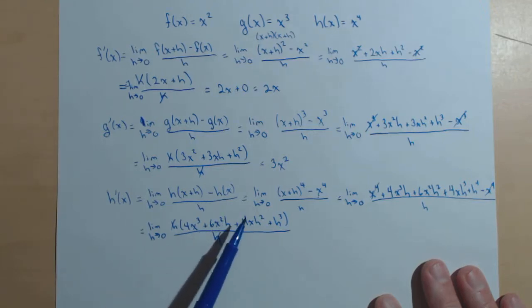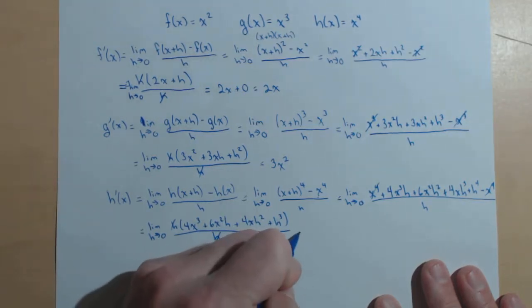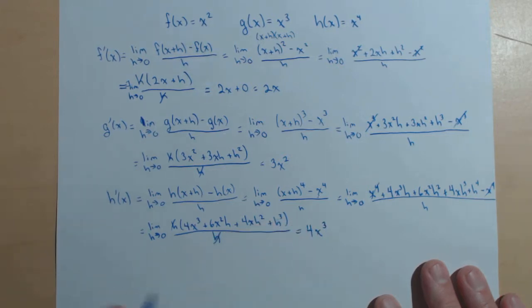Zero is going to go in for h, which means we lose this term, this term, and this term, and we get left with a derivative of 4x cubed.